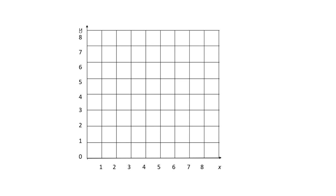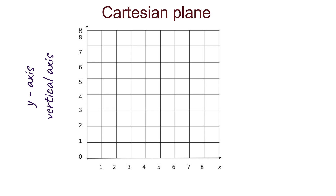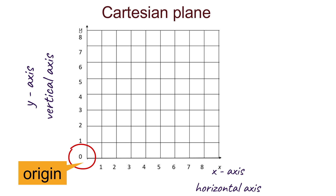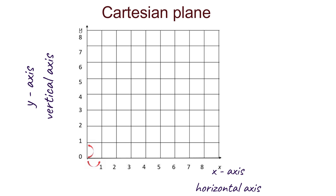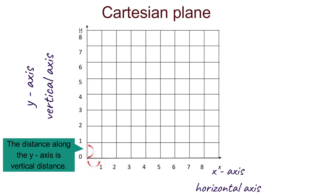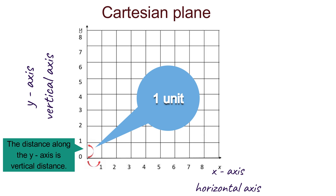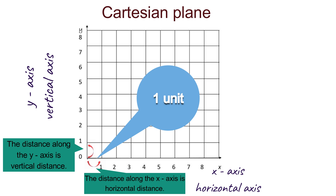But before that, let's do a quick revision. This is a Cartesian plane. This is the Y axis, or vertical axis. This is the X axis, or horizontal axis. Over here is the origin. The coordinates of the origin are 0, 0. The distance along the Y axis is vertical distance, and the distance along the X axis is horizontal distance.